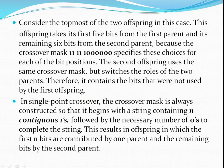For example, consider the topmost of the two offspring: it takes five bits from the first parent and the remaining six bits from the second parent. We know this by using the crossover mask — the crossover mask bit string has five ones followed by six zeros. The five ones indicate that the first five bits are taken from parent one, and the remaining six bits are taken from parent two to form the first new offspring. For the second offspring, the same crossover mask is used but the roles are swapped.